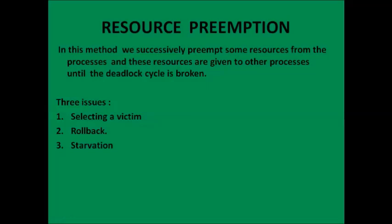When we use resource preemption, we need to consider three issues. First is selecting a victim — we need to determine which resources and which processes are to be preempted, and must determine the order of preemption to minimize the cost. Cost factors may include the number of resources a deadlocked process is holding and the amount of time the process has thus far consumed in its execution.